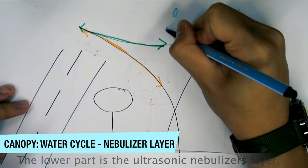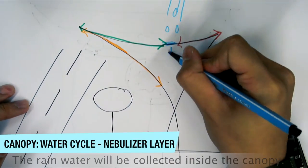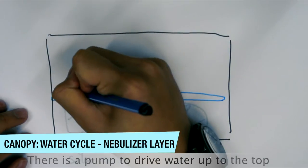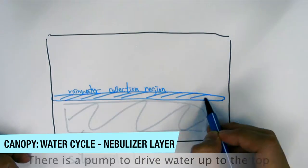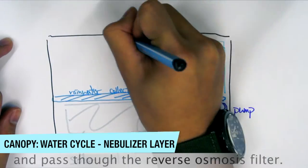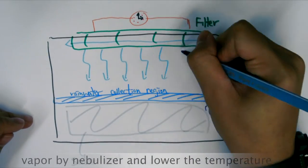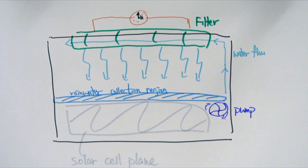The lower part is the ultrasonic nebulizer layer. The rainwater will be collected inside the canopy. There is a pump to drive water up to the top and pass through the reverse osmosis filter. The clean water flows back and turns to vapor by nebulizer and lowers the temperature.